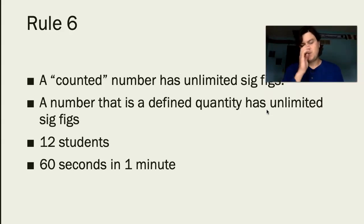And finally, Rule 6. Rule 6 is kind of interesting. I think it's the rule that tricks students up most often. And it has to do with counted numbers, and defined. Counted and defined numbers. A counted number has unlimited significant figures.